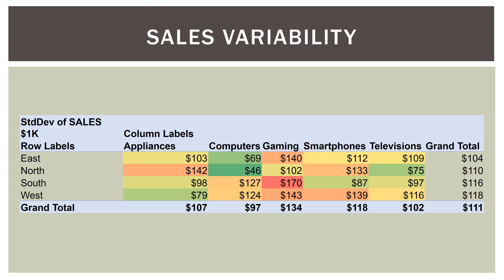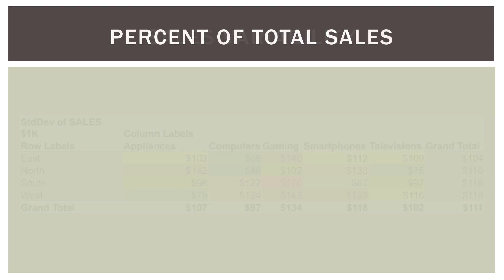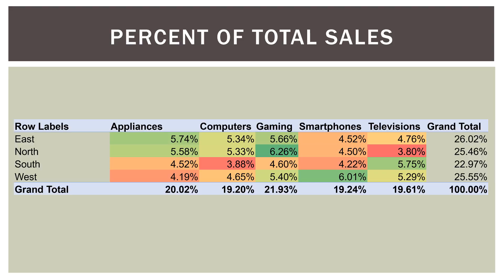Inside each cell in a cross tab you can do pretty much whatever you want. For example, we can look at percent of total sales. Gaming in the north region accounted for 6.26% of total sales, while televisions in the north were 3.8%. Using conditional formatting in Excel, we can see the hotspots — what was doing well and what was doing poorly. It appears gaming was doing very well overall, and the east region seems to be doing the best out of all four regions.